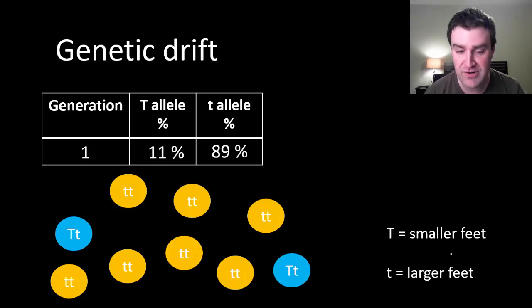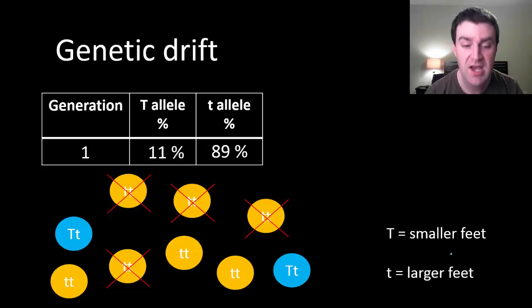If I were to again go to my population with small and large feet, most of them have large feet in this example. But a hurricane sweeps through and kills a bunch of them, and really kills a lot of them with larger feet. If they go away, then the individuals who are left to reproduce, we might find that in the next generation the allele frequencies have changed quite a bit due to genetic drift causing evolution.